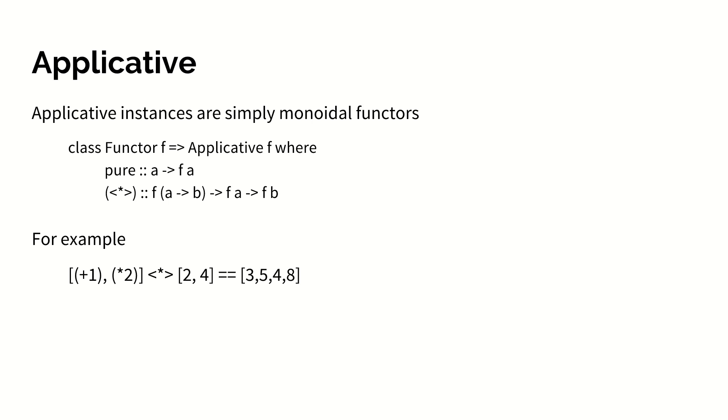Just as functor had a container type f, pure just takes a value and puts that value inside of the container type. App is applicative's version of functor's fmap. App takes a structure of functions from a to b, then takes a structure of a's and returns a structure of b's.